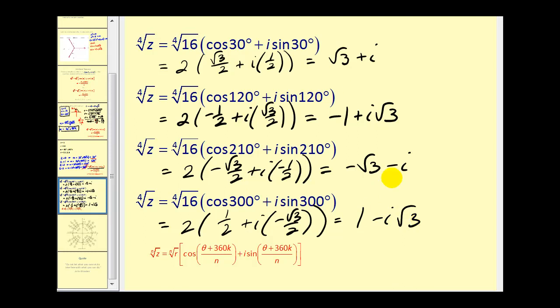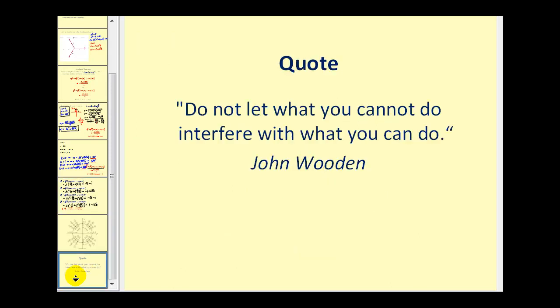These are the four fourth roots of −8+8i√3. If we take any of these and raise it to the fourth power, we will get −8+8i√3. I hope you found this video helpful.